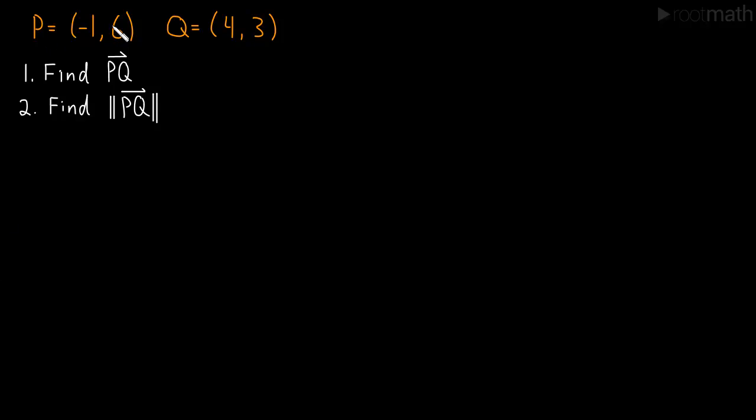Okay, so here we're given two points P and Q. We're being asked to find the vector that runs from P to Q, that's this notation here, and we're asked to find the length of that vector.